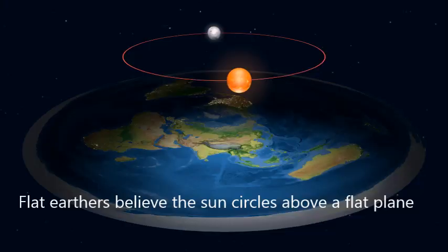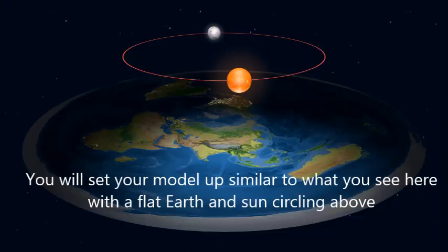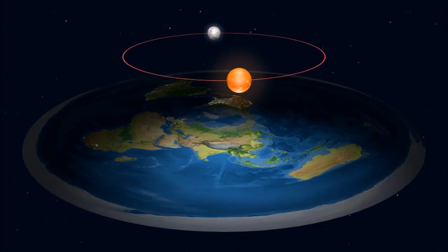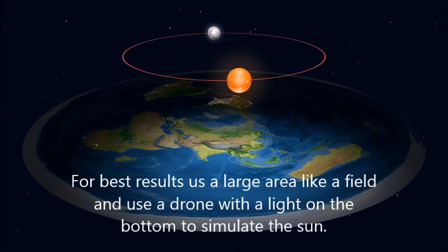Flat earth believers hold that the Sun circles above a flat plane, just like you see here. You will set your model up similar to what you see here, with a flat earth and the Sun circling above. For best results, use a large area like a field and use a drone with a light on the bottom to simulate the circling Sun.